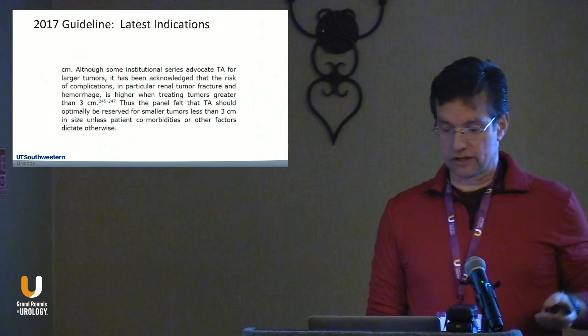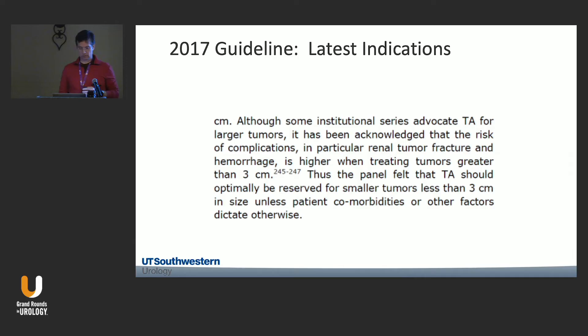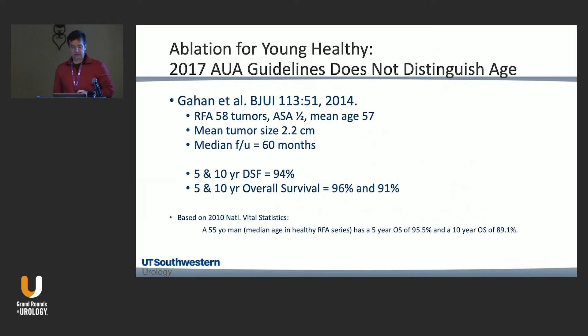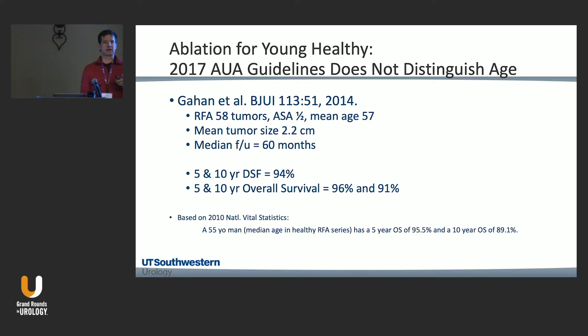This is where the 2017 guideline statement originated, now reinforced in the update: thermoablation should be reserved for smaller tumors less than three centimeters in size, unless comorbidities or other factors dictate pushing the envelope. Importantly, none of the guidelines make any specific reference to age or comorbidities as a prerequisite indication — ablation is effective for patients of any age. Freezing or heating tissue doesn't care how old you are.